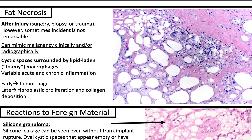We talked about fat necrosis, so let's go more in depth. This can happen after injury, surgery, biopsy, or trauma — someone who got hit by a baseball can develop fat necrosis that appeared as a mass clinically. It can mimic malignancy clinically and/or radiographically.